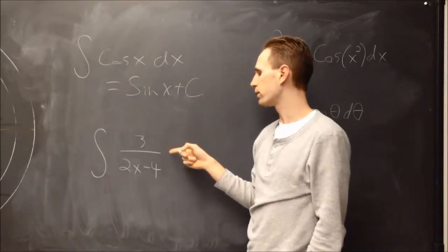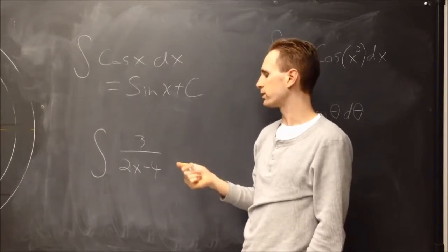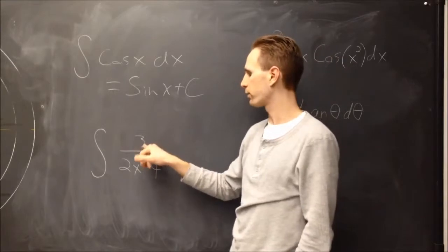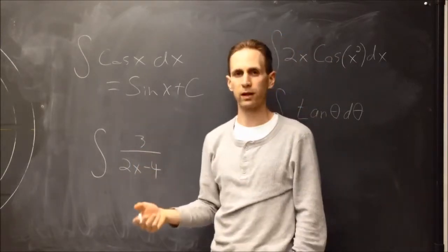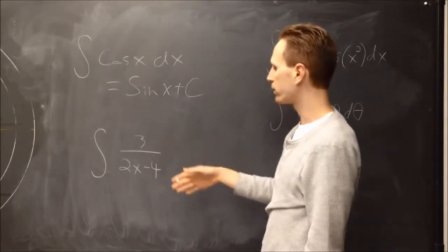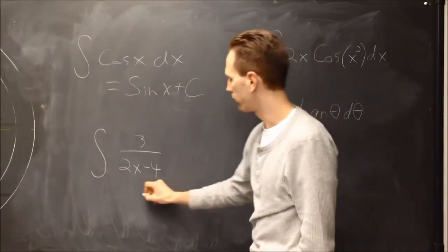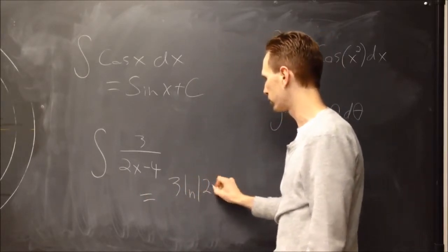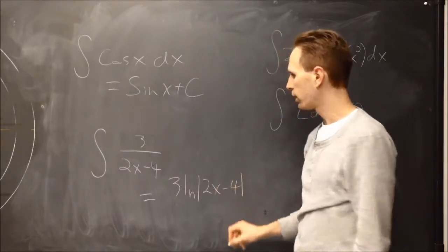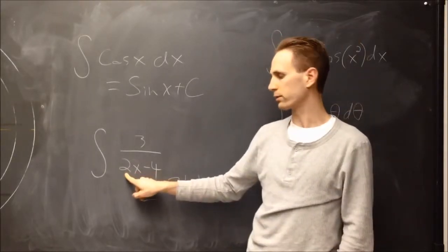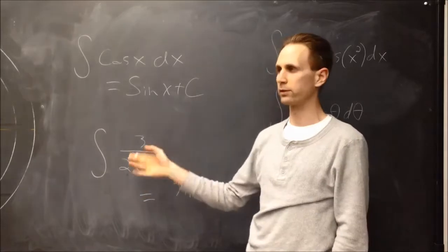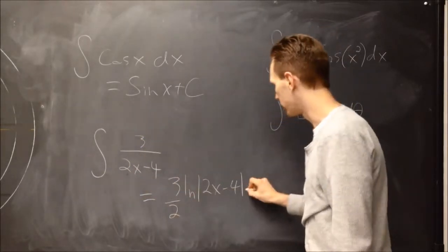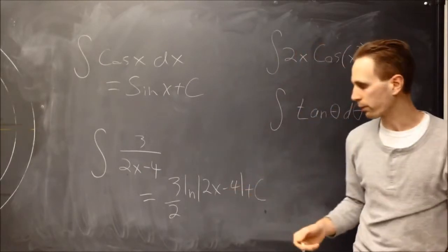Another example we've covered in class: something like 3 over x means there's going to be a log involved. If you do enough of these, you can eyeball them and figure that this is going to be 3 ln|2x − 4|, and because of this 2, we divide the answer by 2 due to the chain rule, plus c. We can always easily check answers with differentiation.